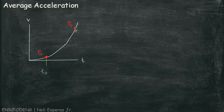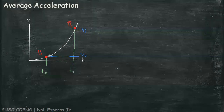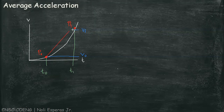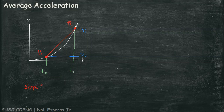For P-O, this has a coordinate of T-O, the initial time, and initial velocity or V-O. And for P-F, the final point, we have a coordinate of T-F and V-F or final velocity. So, our acceleration equals this slope between point P-O and point P-F, which is equal to rise — the change in velocity — over run — the change in time.